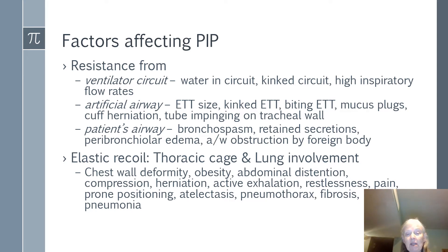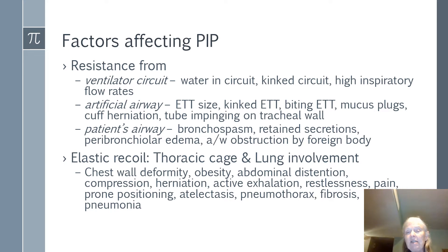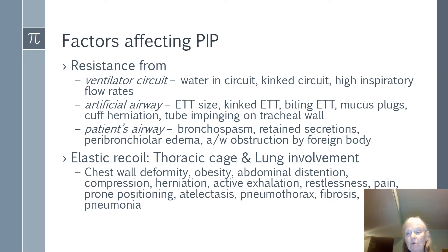Elastic recoil involves your thoracic cage and lung. Chest wall deformity and obesity also affect PIP — with obese patients, don't lay them flat because the abdominal cavity pushes up on the diaphragm. Active exhalation is another concern; exhalation should always be passive. If your patient is actively exhaling, figure out what's going on. Restlessness, pain, prone positioning, pneumothorax, fibrosis, and pneumonia can all affect peak inspiratory pressure.